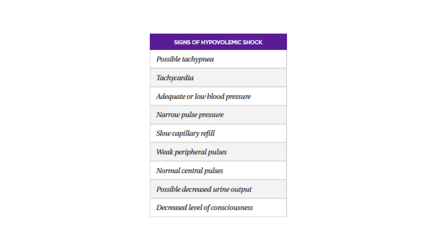Signs and symptoms of hypovolemic shock include possible tachypnea, tachycardia, inadequate or low blood pressure, narrow pulse pressure, slow capillary refill, weak peripheral pulses, normal central pulses, possible decreased urine output, and decreased level of consciousness.